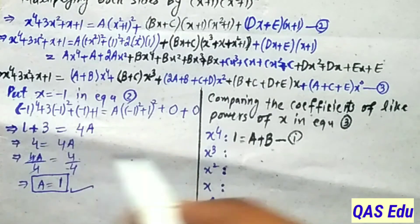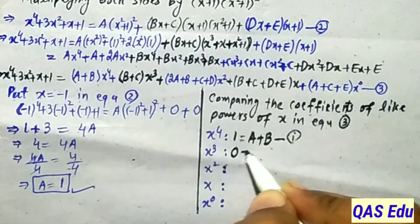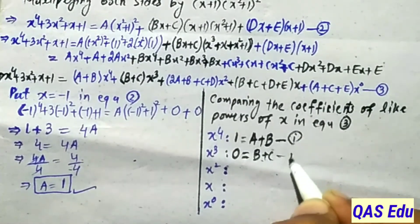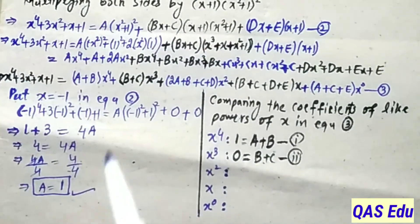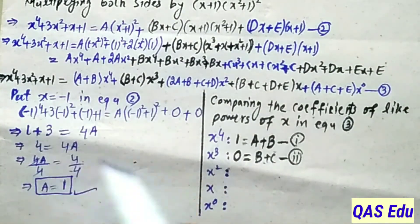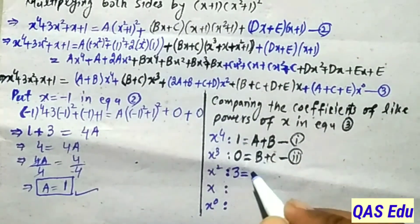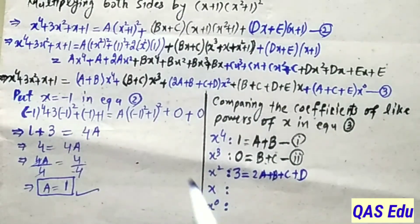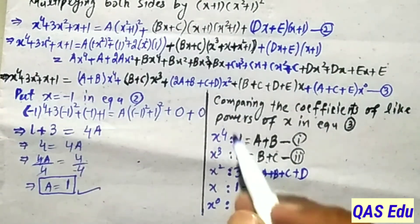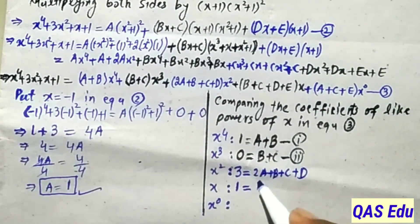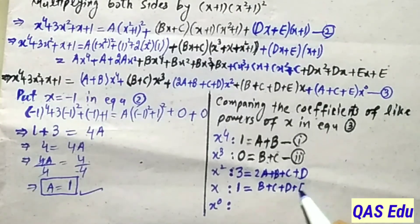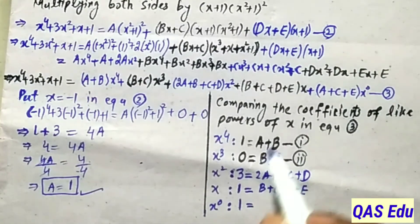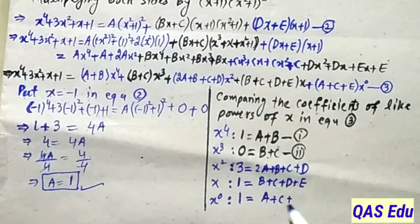Comparing x³ coefficients: left side = 0, right side = B + C. This is equation number 2 (B + C = 0). Comparing x² coefficients: left side = 3, right side = 2A + B + C + D. Comparing x¹ coefficients: left side = 1, right side = B + C + D + E. Comparing x⁰ coefficients: left side = 1, right side = A + C + E. This is equation number 3.